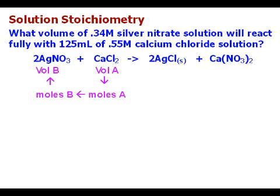The first time we're going to multiply by the molarity of calcium chloride, and towards the end of the problem we're going to divide by the molarity of the silver nitrate.